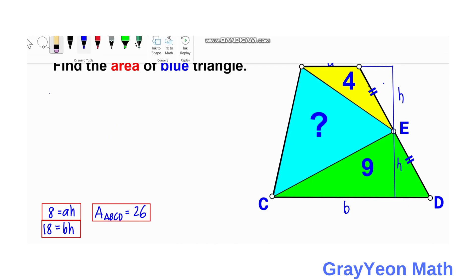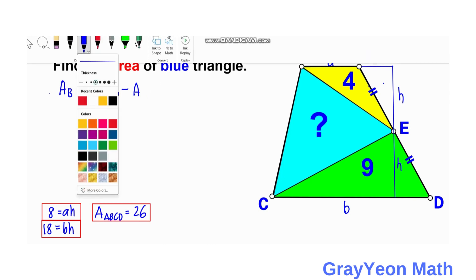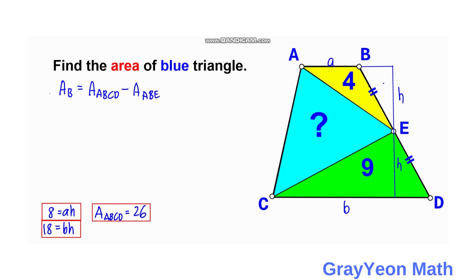For the final step, the area of the blue triangle equals the total area of ABCD minus the area of the yellow triangle (ABE) minus the area of the green triangle (CDE). So the area of the blue triangle equals 26 minus 4 minus 9, which gives us 13 square units. That is our answer.